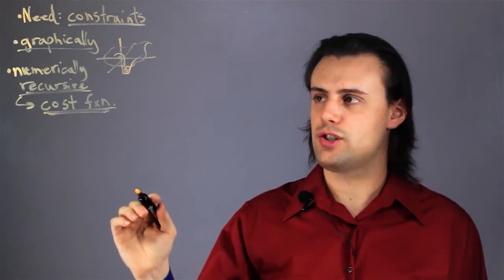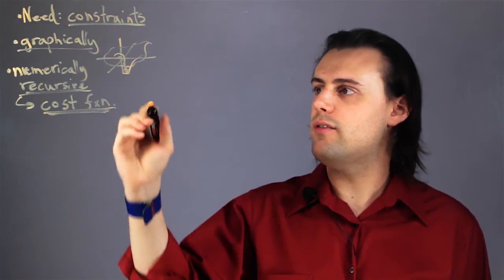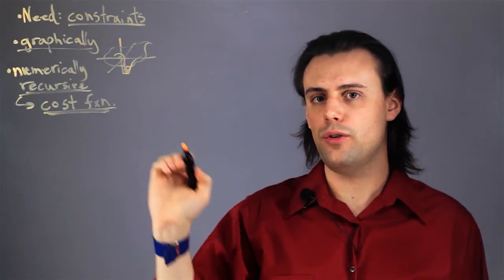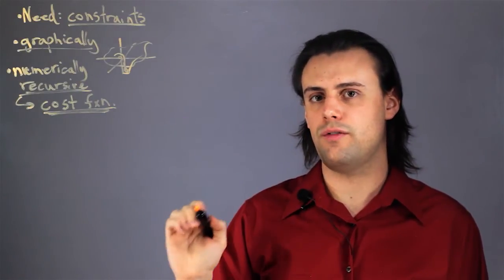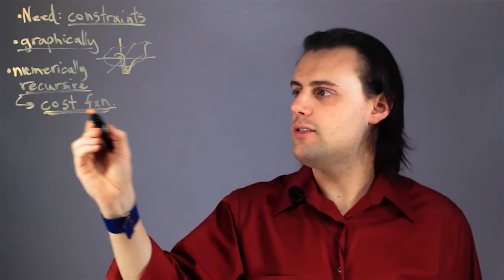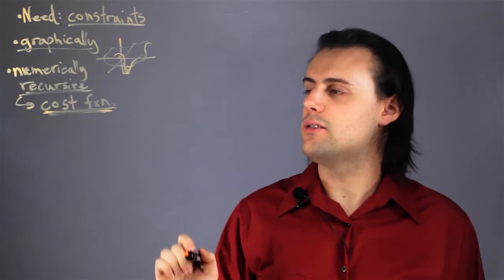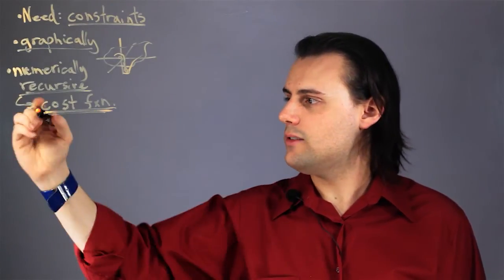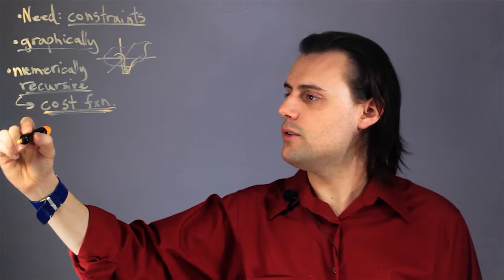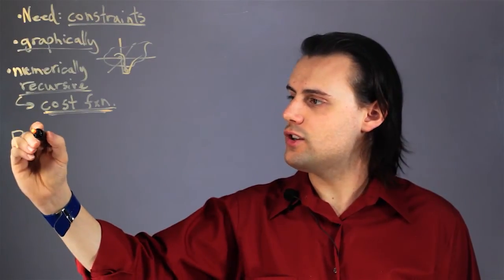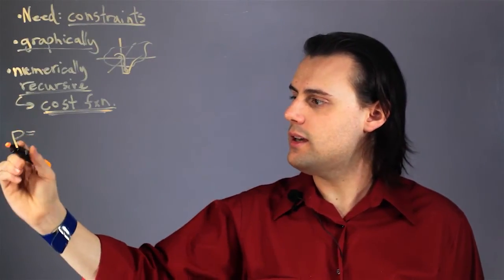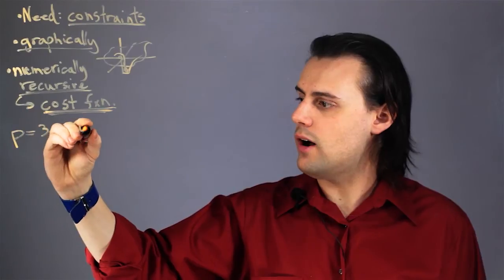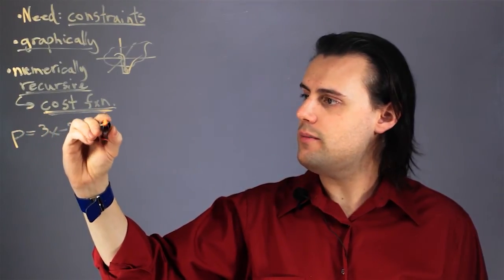You start out with a function — an objective function — and you want to get as close to that objective function as possible. That's the primary reason for a cost function. As an example, you would have a function p equals 3x minus 2y plus 4z.